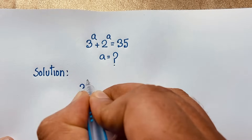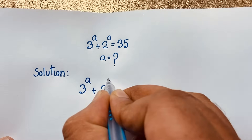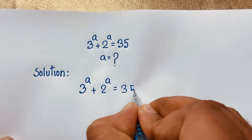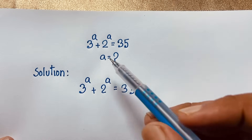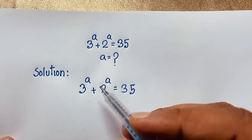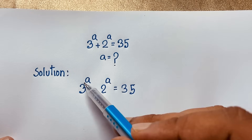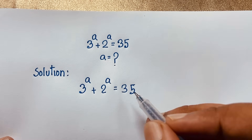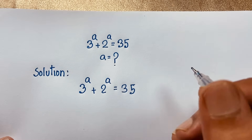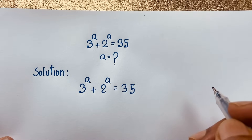This is our question. Now if you think: a is equal to 1, or a is equal to 2, or a is equal to 3 — if a is equal to 3, it will be 27 plus 8, which equals 35. So our final answer is a is equal to 3. But how to solve this interesting math problem properly?